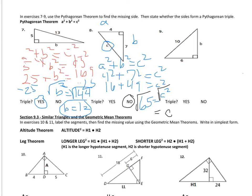For number 9, I want you to find the missing part — what b is — and also answer whether it is a yes or a no as a Pythagorean triple.